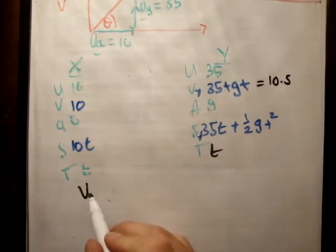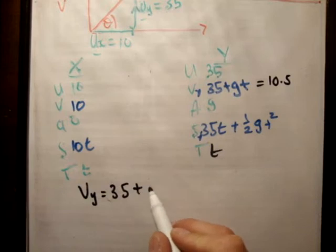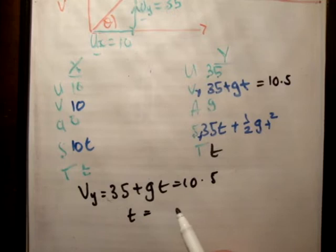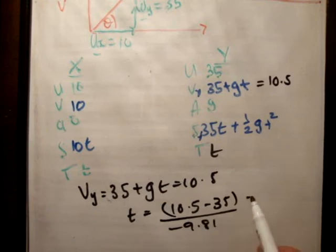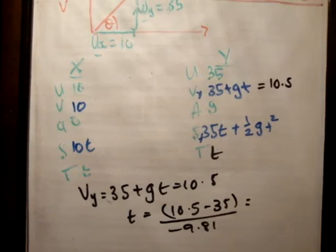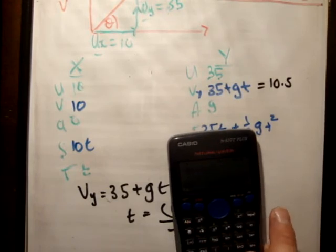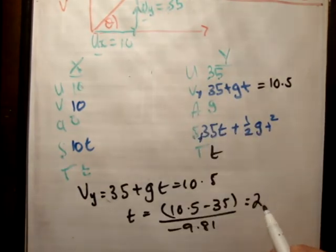So we'll say v sub y. So therefore, t is equal to 10.5 minus 35 over minus 9.81. And that's equal to minus 2.49. So say that's 2.5 seconds. Is that correct? So that's, yeah, that's correct as well.